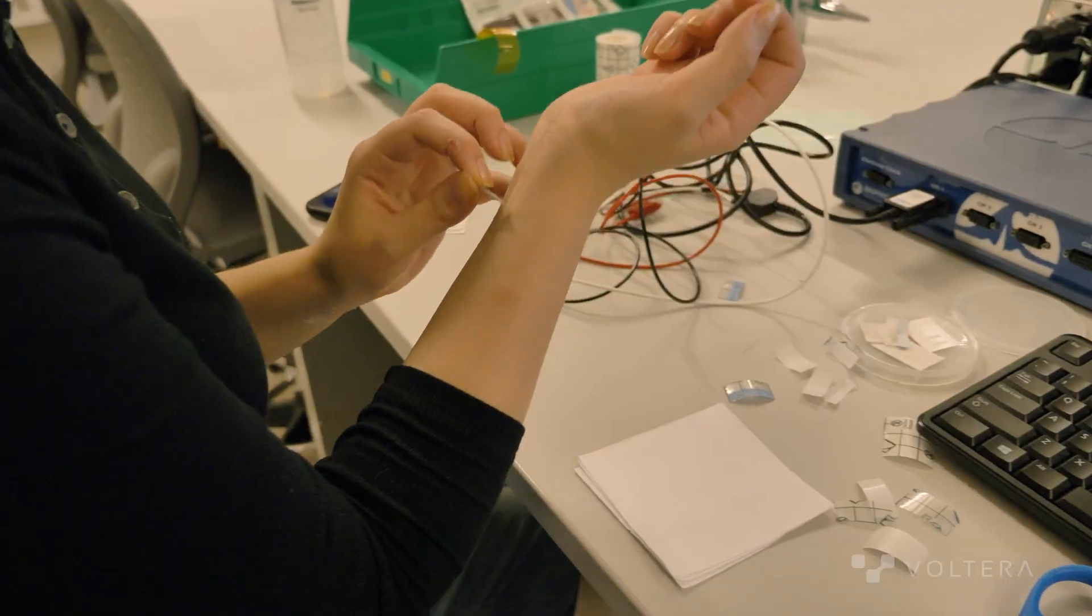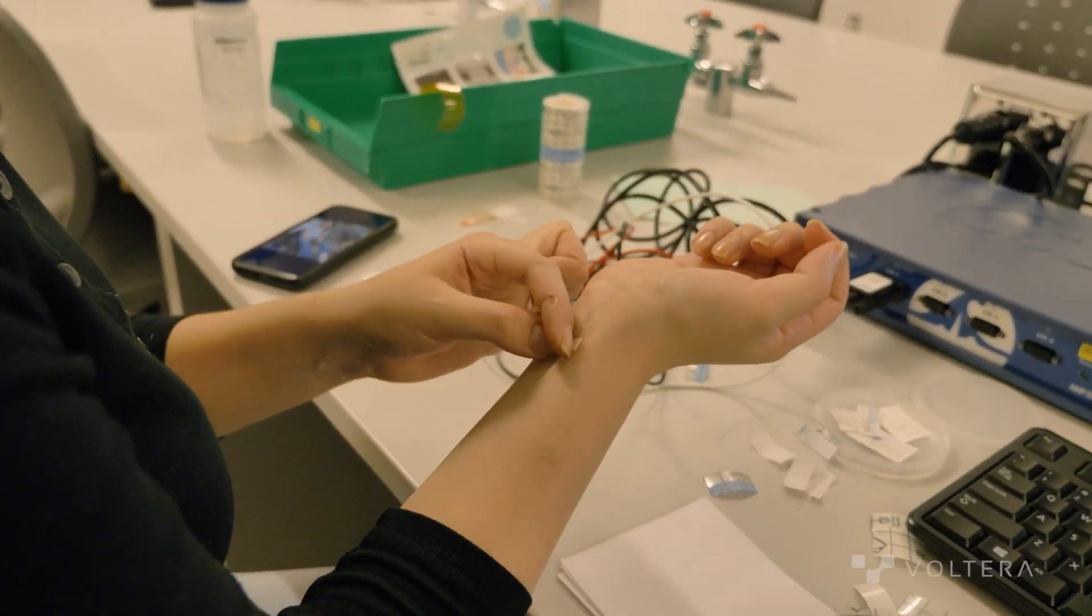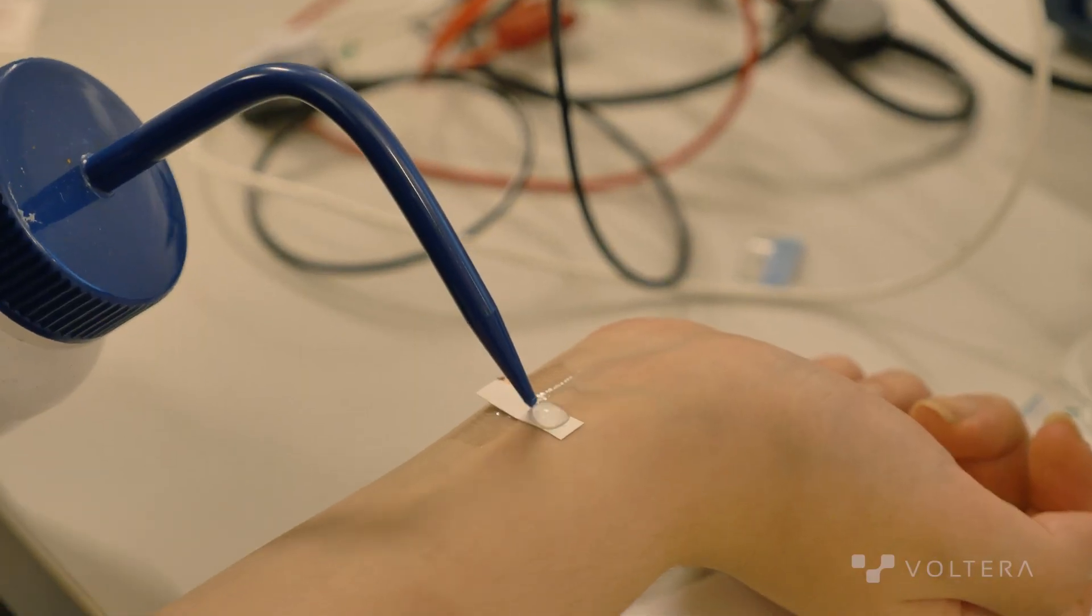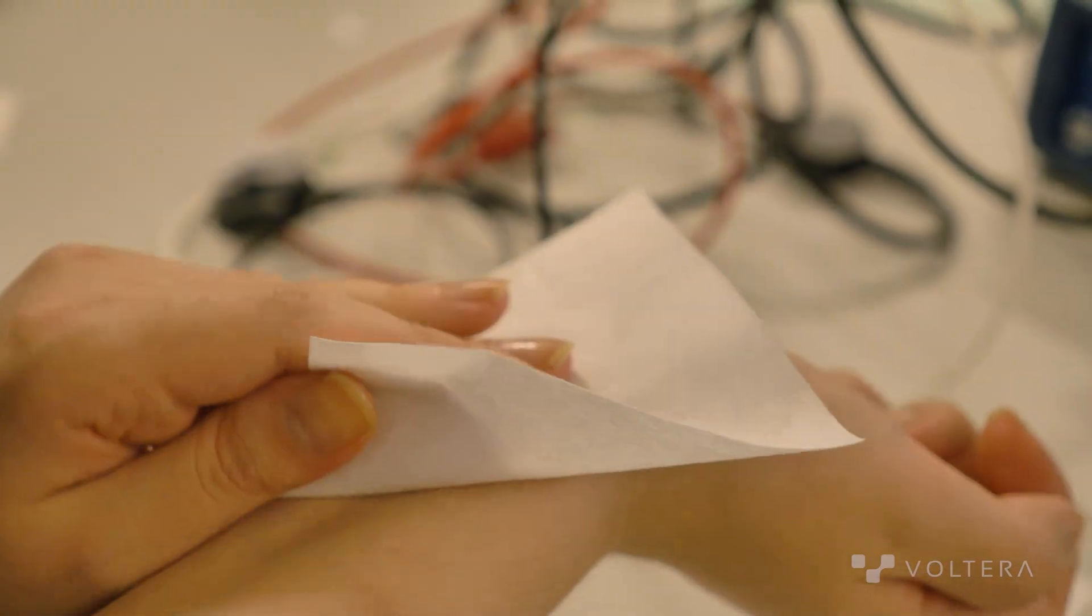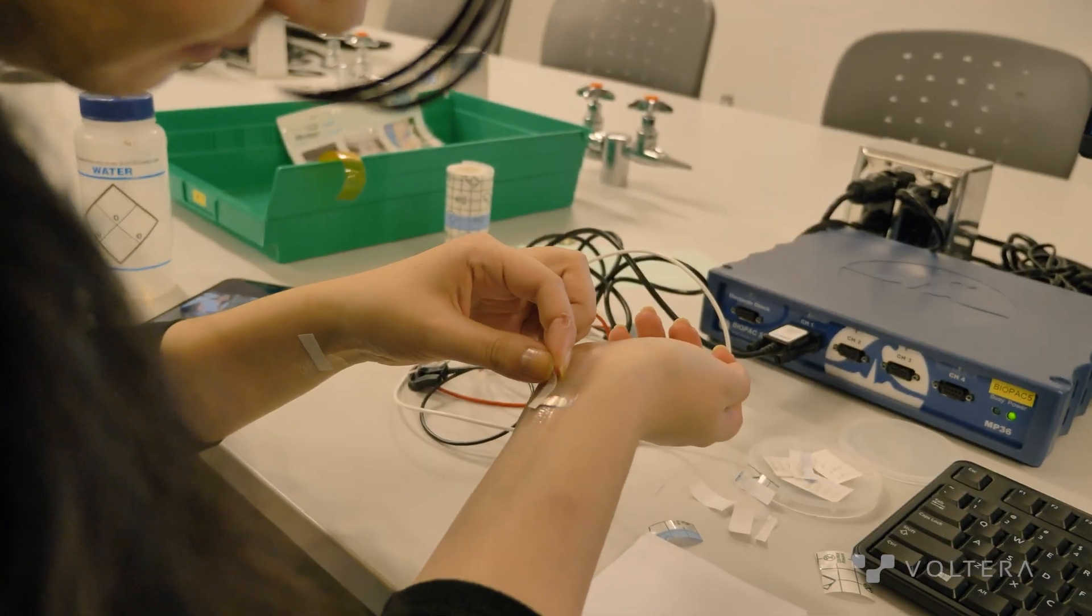The tattoo paper itself has a layer of starch on top, and this allows for a pattern to be printed and then transferred onto the resulting surface, which is the skin.